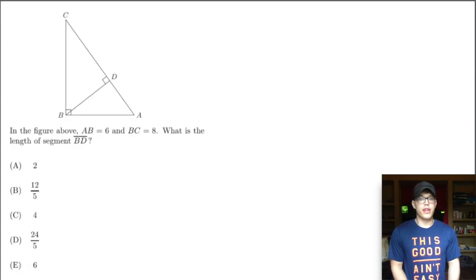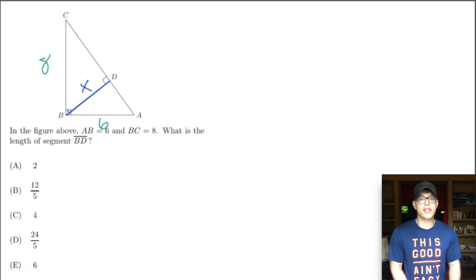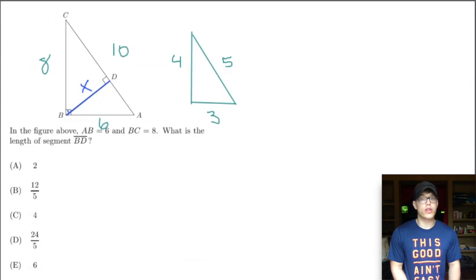In the figure above, AB equals 6, BC equals 8. What is the length of segment BD? We should always write down what we're told: AB is length 6 and BC is length 8. The first thing I'm noticing is that 6 and 8 is one of our special right triangles — it's the 3-4-5 right triangle scaled up by a factor of 2. So the length of AC is 10. I definitely recommend knowing your special right triangles because it saves a whole bunch of time, and the hardest thing about the SAT is the time crunch.